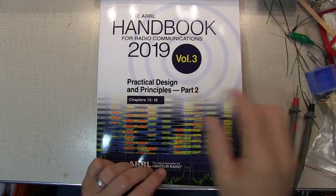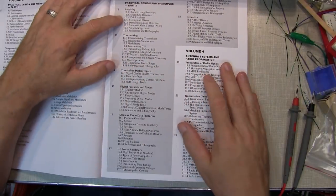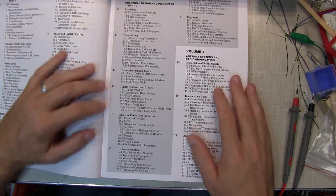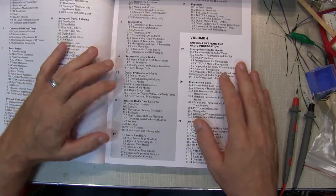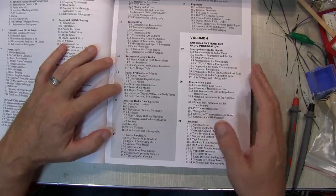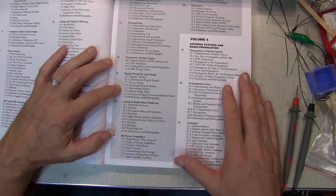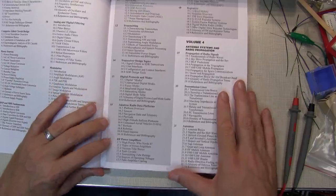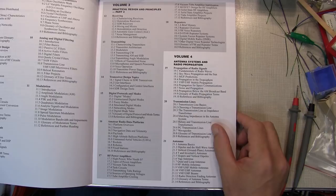Volume 3 continues on the Practical Design and Principles, and talks about receiving and transmitting, both circuits and architectures and how they work, transceiver design topics, digital protocols and modes that are very common in amateur radio and elsewhere, amateur radio data platforms, RF power amplifiers, and radio repeaters.